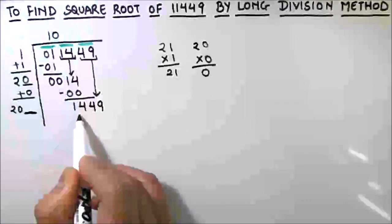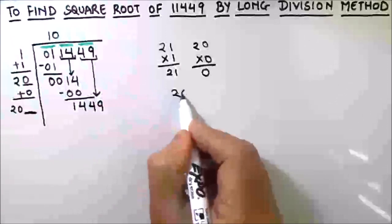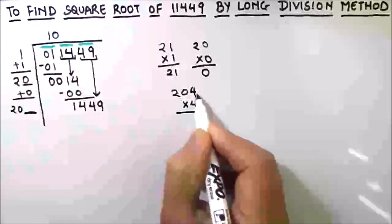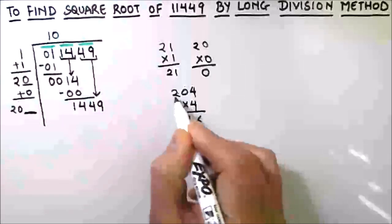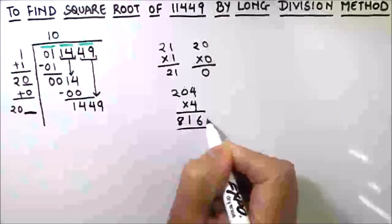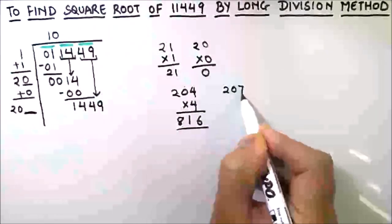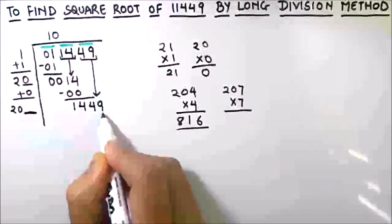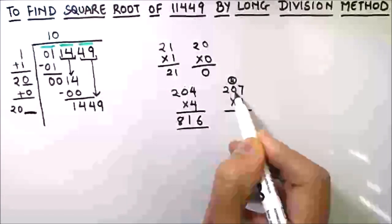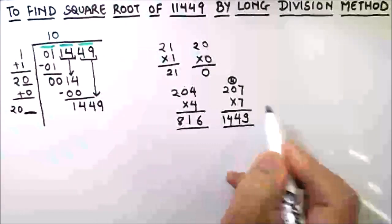So let's try different numbers. If we'll add four, 204 times four will give us four times four is 16, one is carried over, four times zero is zero and one, four times two is eight: 816, which is way less than 1400. So let's try 207 and multiply it by seven. Seven times seven is 49, four is carried over, seven times zero is zero plus four is four, and seven times two is 14. We got the same number as our dividend, so we are going to use seven as our divisor digit.